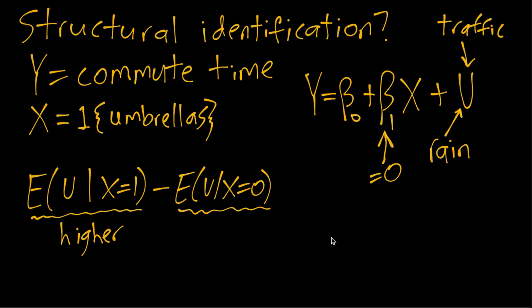In which case it's possible that sometimes there's still a lot of traffic for other reasons. But if we think about on average, this is looking at the conditional mean of u. On average u will tend to be lower when people are not carrying umbrellas because of the lack of rain. So if we have a higher number minus a lower number we'll get something that is positive.